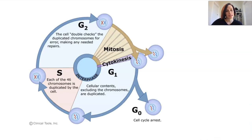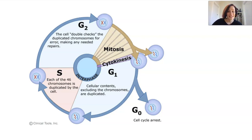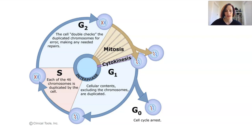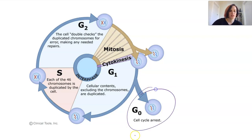We've discussed the idea that cells in our body have a cycle. The cell spends most of its time in interphase — the G1, S, and G2 phases — where it grows, functions, and prepares for cell division. It can also spend some time at G0 as well.